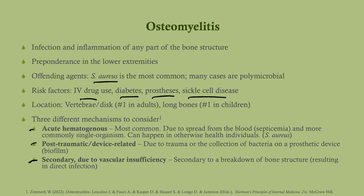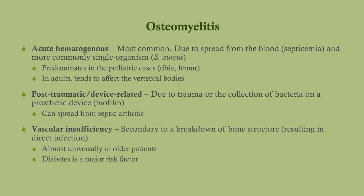The third mechanism is secondary due to vascular insufficiency, which is very common particularly among diabetics. With acute hematogenous, this predominates in pediatric cases in the tibia or femur. In adults, the hematogenous route is particularly associated with vertebral bodies — so think tibia and femur in kids, vertebral bodies in adults. Post-traumatic or device-related can spread from septic arthritis. With vascular insufficiency, this is almost always in older patients and diabetes is a huge risk factor. So remember there are three mechanisms for osteomyelitis.